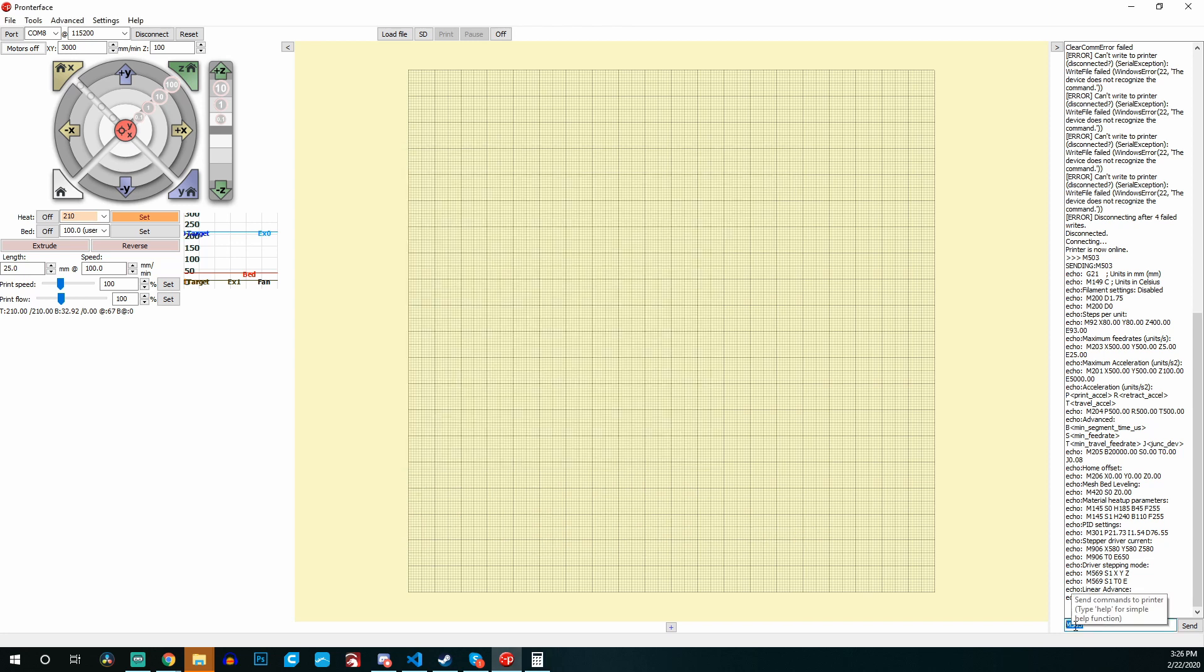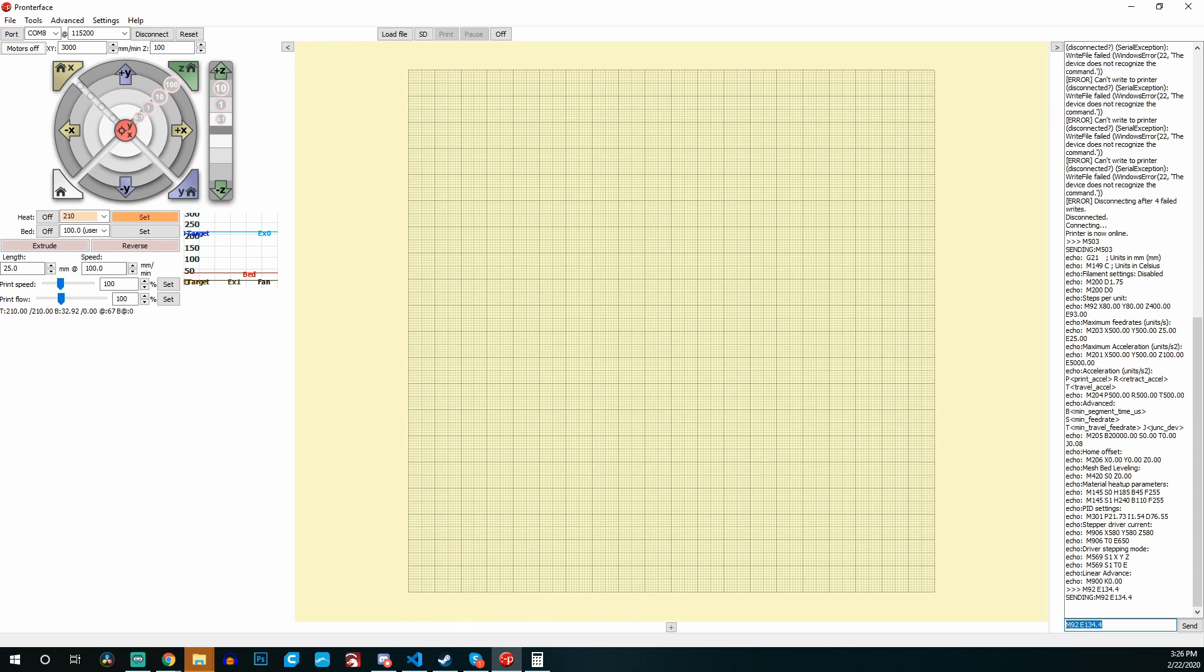To do that, we're going to send over this command, which I'll post again. It's just M92 and then you add E and then whatever that value is. In my instance it's 134.4, so I'm setting my printer's e-steps extruder to that value. Then send over the M500 command. This will save that value.